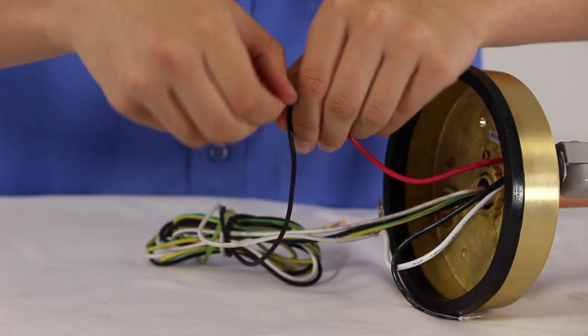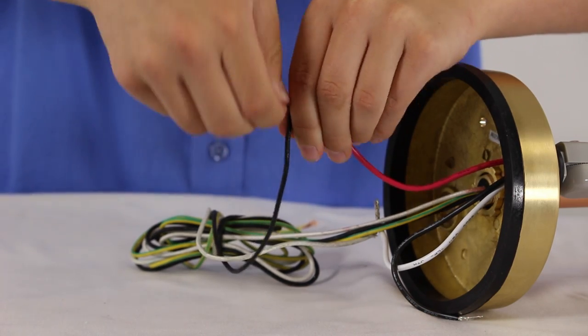Then, take the red wire or switch leg from the accessory and connect it to the black wire on your gooseneck and twist together.